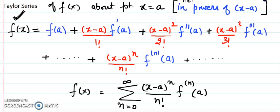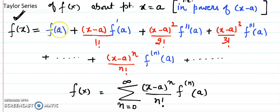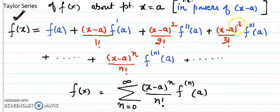Before that, let's see what a Taylor series is. The Taylor series of a function f(x) about a point x equals a can be written as: f(x) equals f(a) plus (x minus a) times f'(a) over 1 factorial, plus (x minus a) squared times f''(a) over 2 factorial, plus (x minus a) cubed times f'''(a) over 3 factorial, and so on.